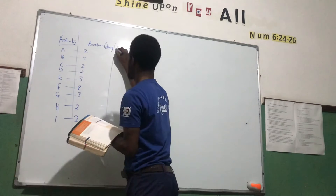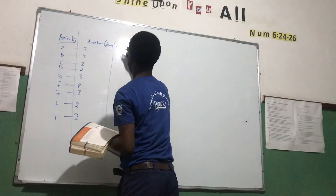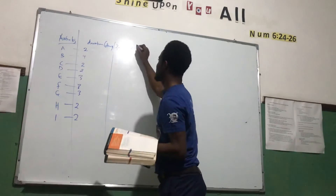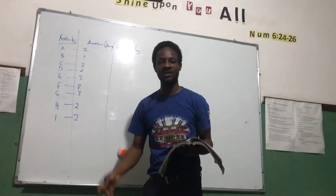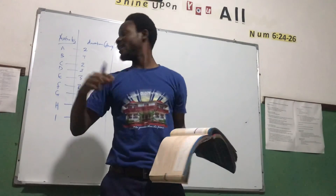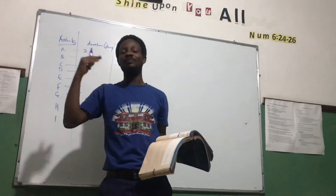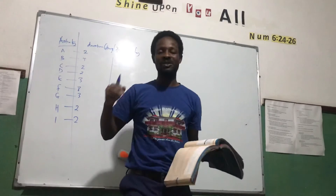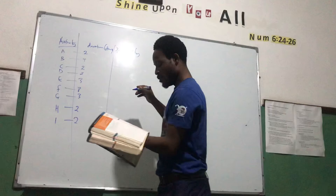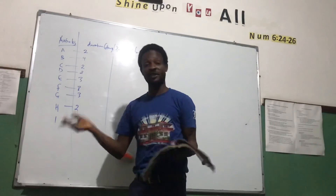Then we have the 'preceded by' group. 'Preceded by' means the activity that must happen before the next activity can happen. It refers to the dependency — the activity that must be complete before a particular activity starts. We are told that A is the start of the project, which means it is preceded by nothing.